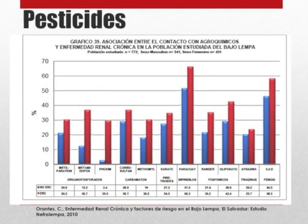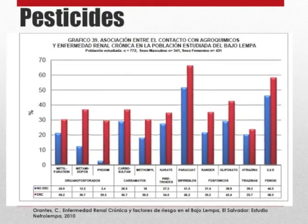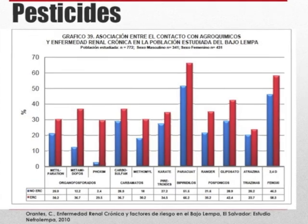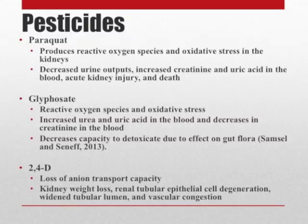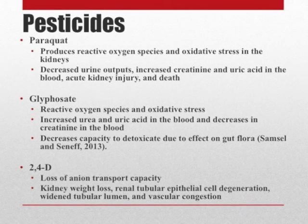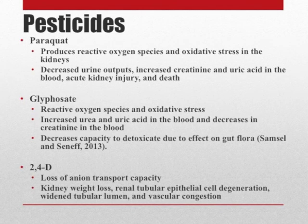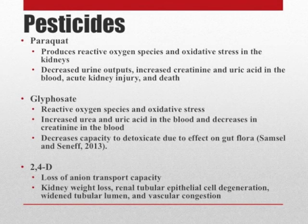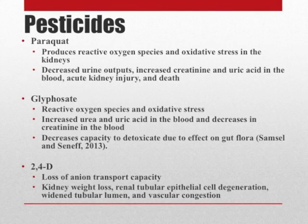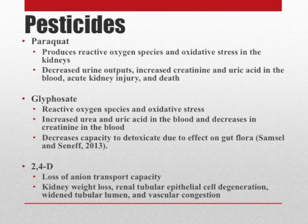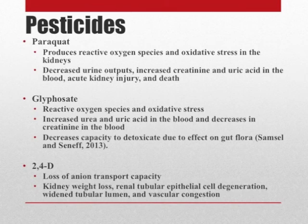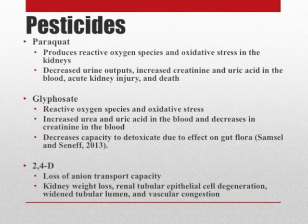As shown in this graph, people of Bajo Lempa have been exposed preferentially to paraquat, glyphosate, and 2,4-D, which are herbicides used in different crops. With respect to these herbicides, paraquat, glyphosate, and 2,4-D are recognized chemicals that can produce problems with the kidney, especially paraquat. However, in recent work by Samson and Seneff, they have proposed that decreased capacity to detoxicate due to the presence of glyphosate in the gut flora produces many other problems, including kidney disease.